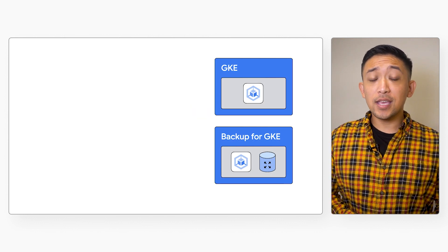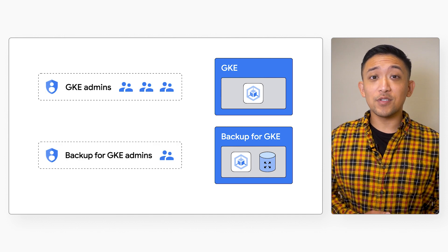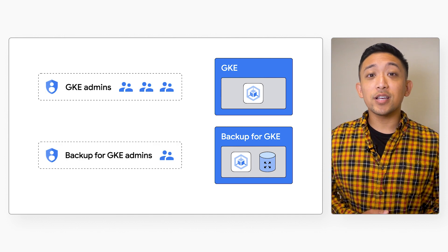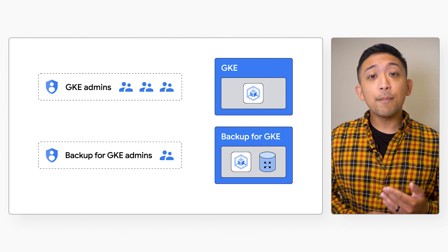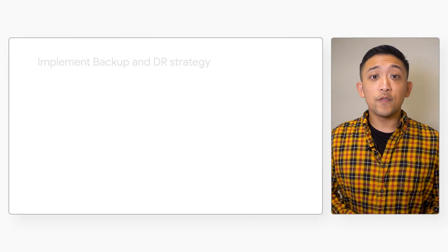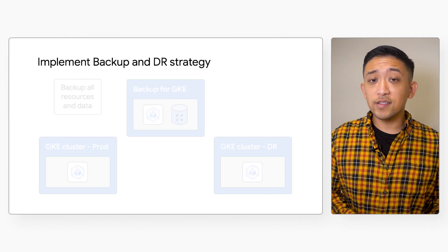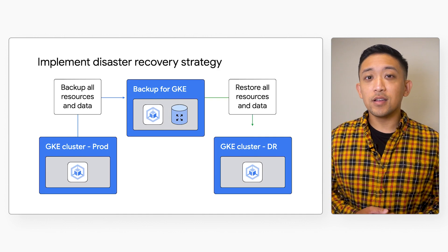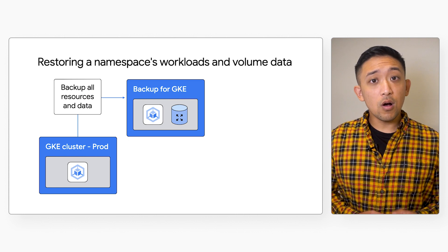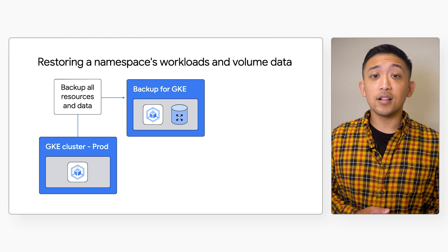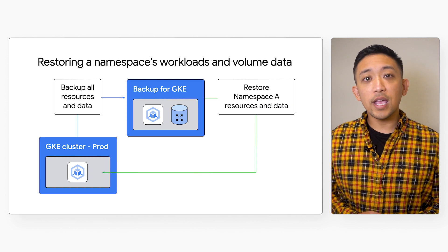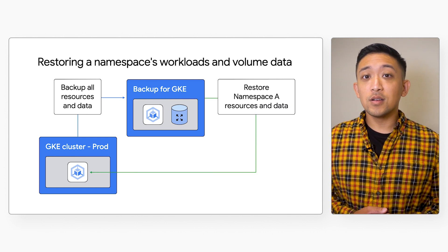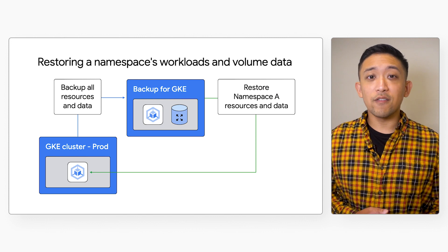Given that Backup for GKE is its own fully managed cloud service, you can also use IAM to restrict who can administer and perform these backups and restores. So many patterns to meet different recovery objectives are possible. For instance, you can back up all resources and data in one cluster and restore all of them to a different cluster in the event of a disaster. You can also back up all resources in a cluster and only restore a specific namespace to the same cluster with its respective workloads and their volume data.